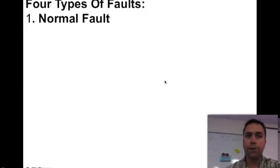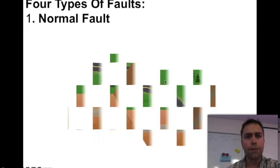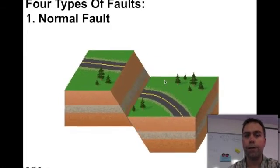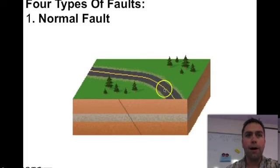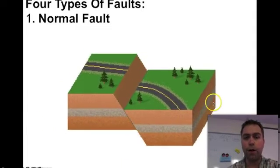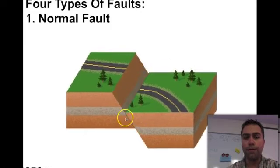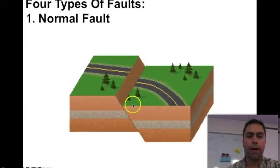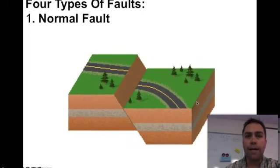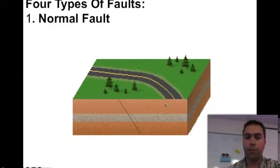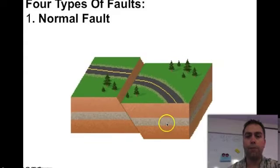Let's look at the four types of faults. The first is a normal fault. Normal faults are caused by tension, or pulling apart. Along this fault, the hanging wall and the foot wall are pulled apart, and in this case the hanging wall moves down. So: normal fault, caused by tension, hanging wall moves down.